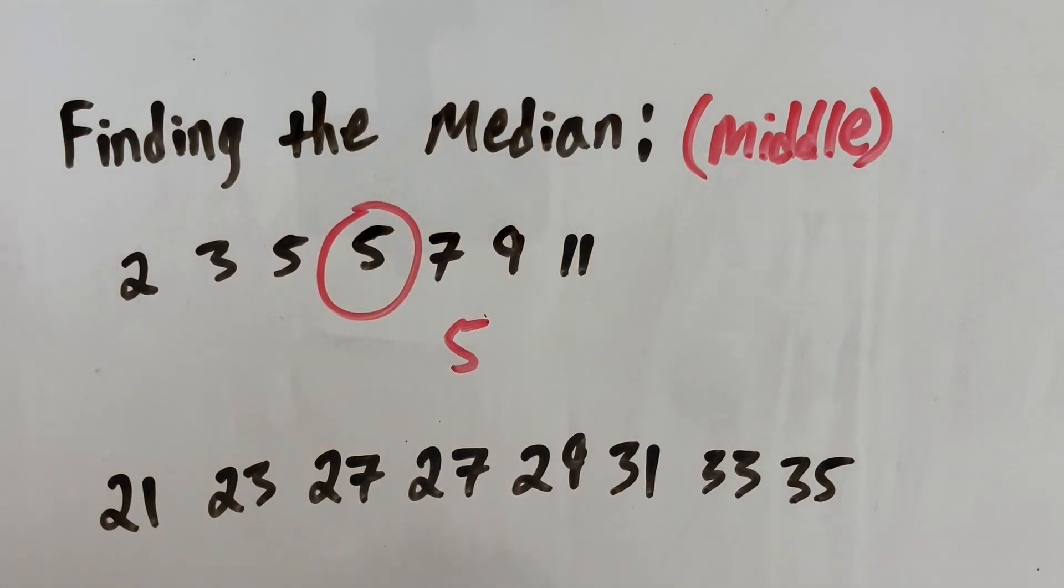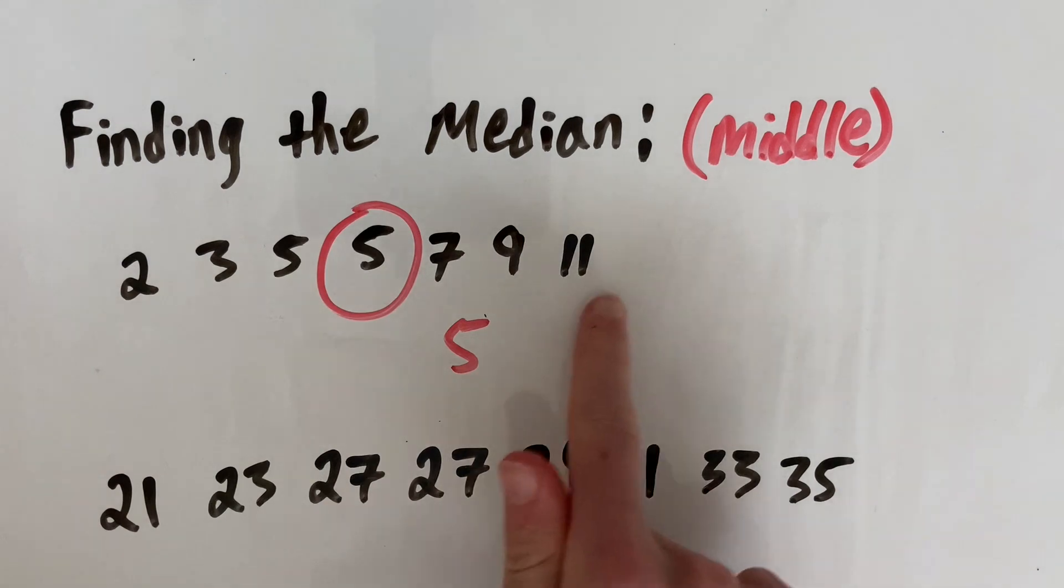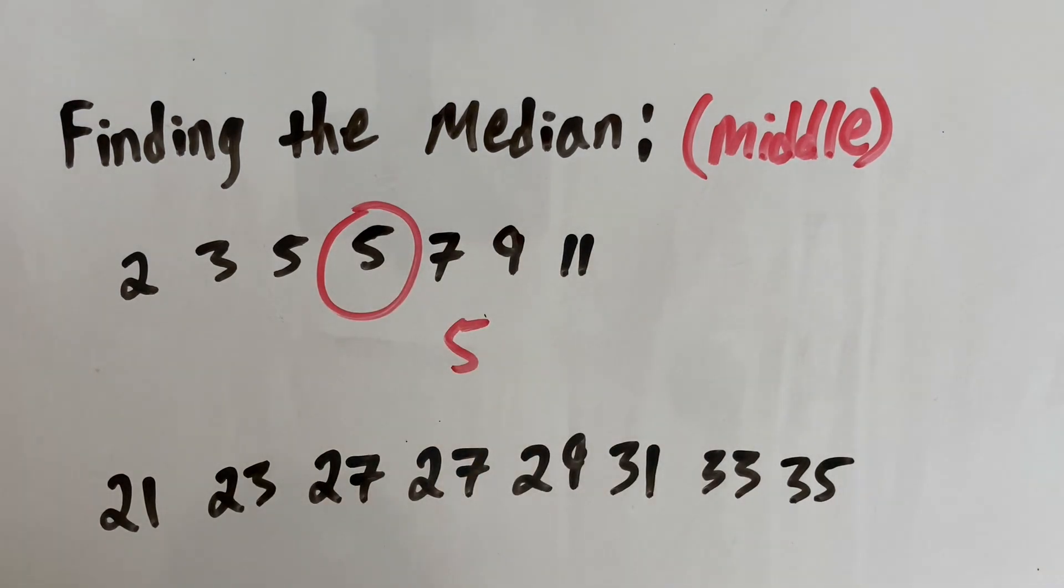Now that's an easy example because there's an odd number of data points. If there's an even number, there's a bit of a trick to it. So we'll go over that trick in this example here.